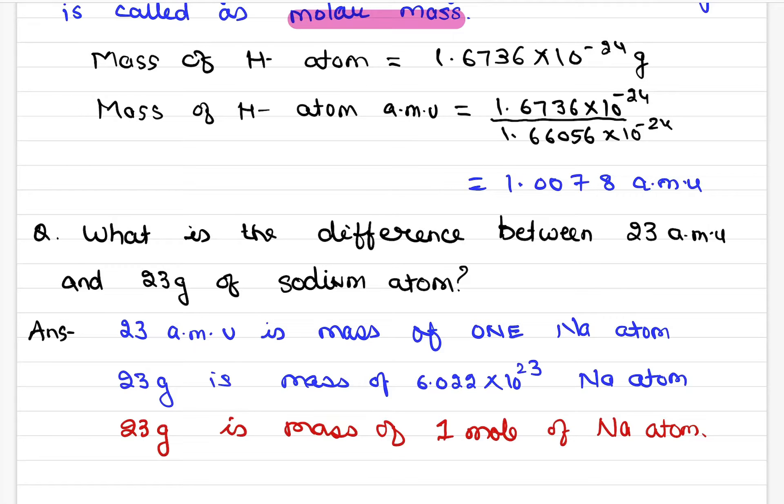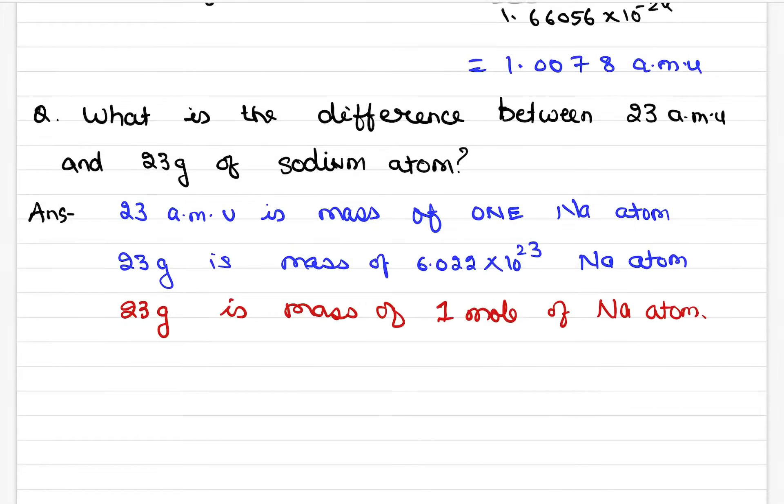In short we can say 1 mole has 6.022 × 10^23 AMU units multiply every time because mole is so.